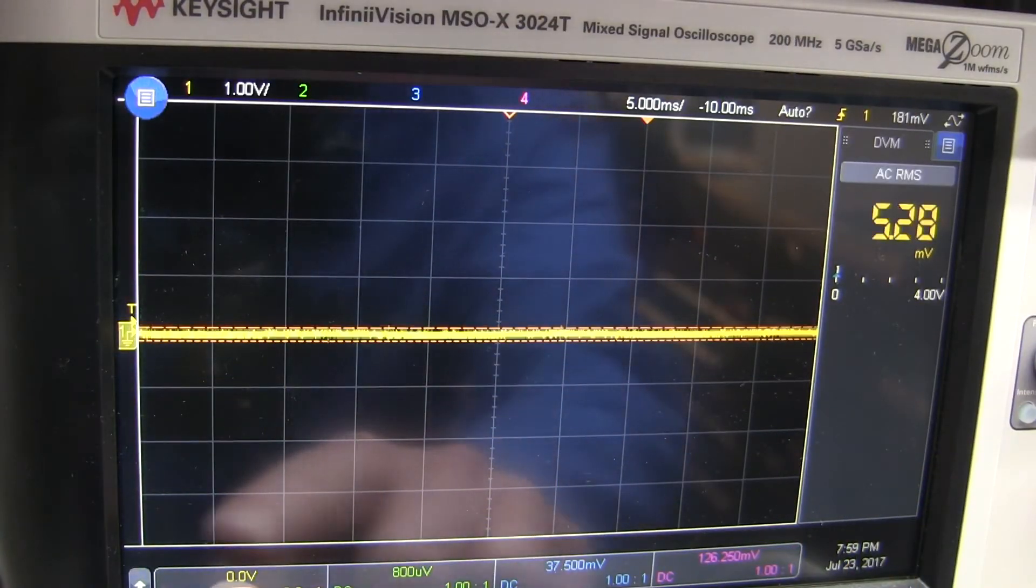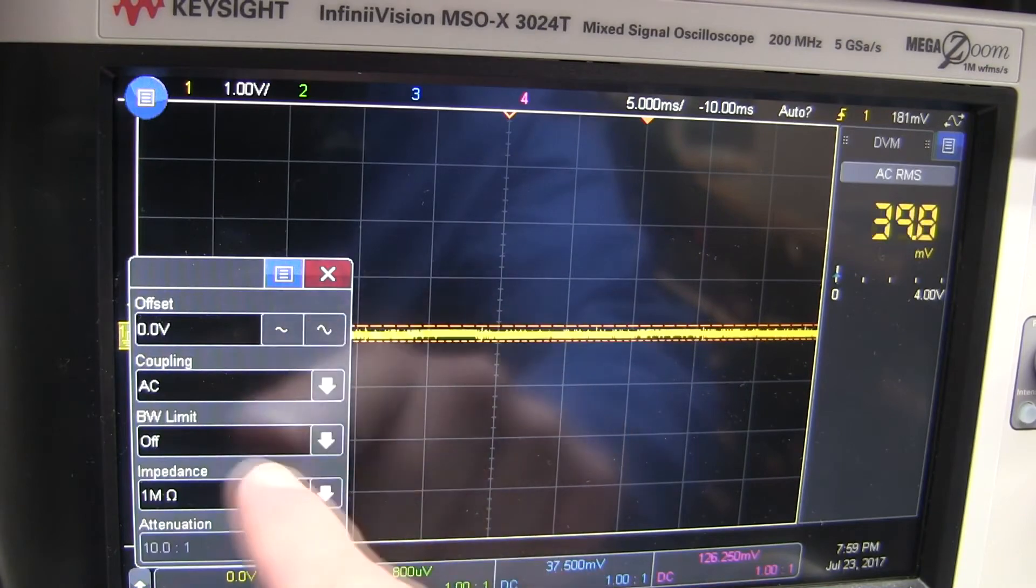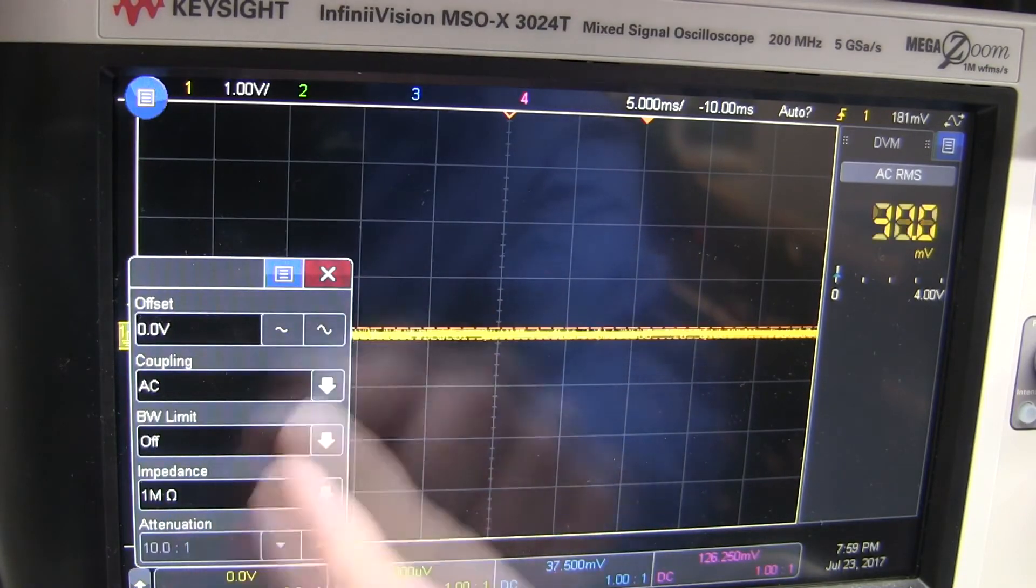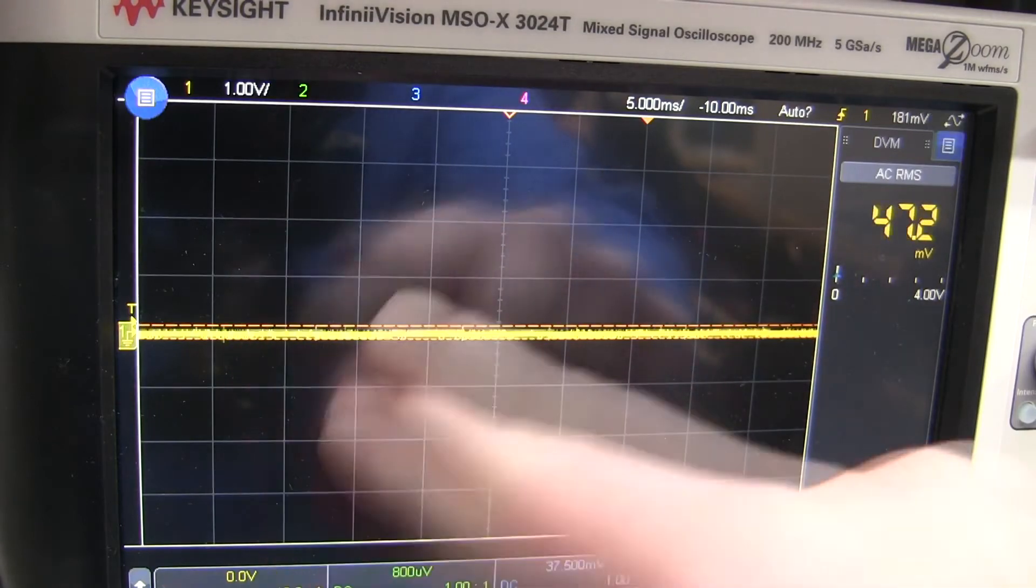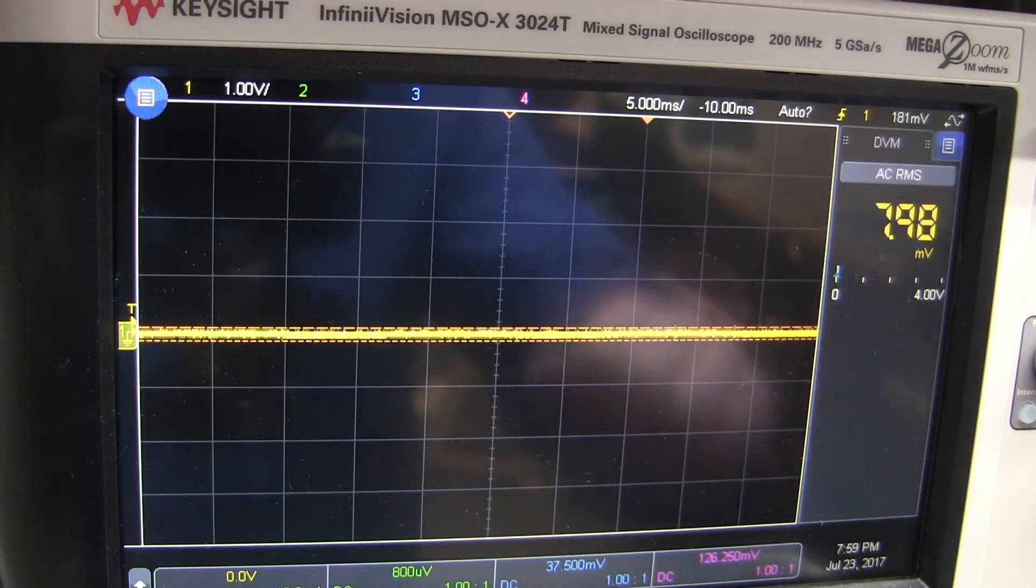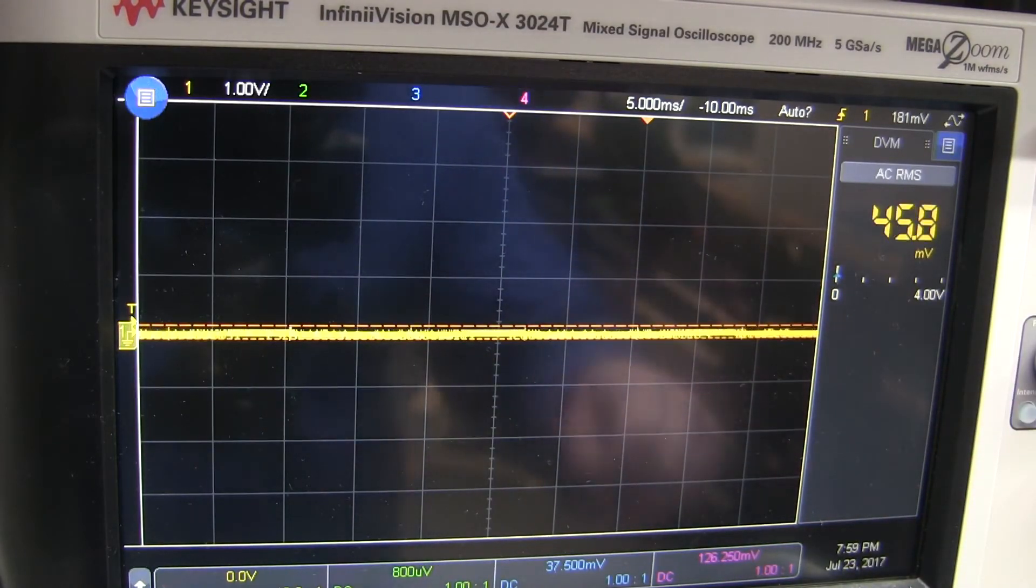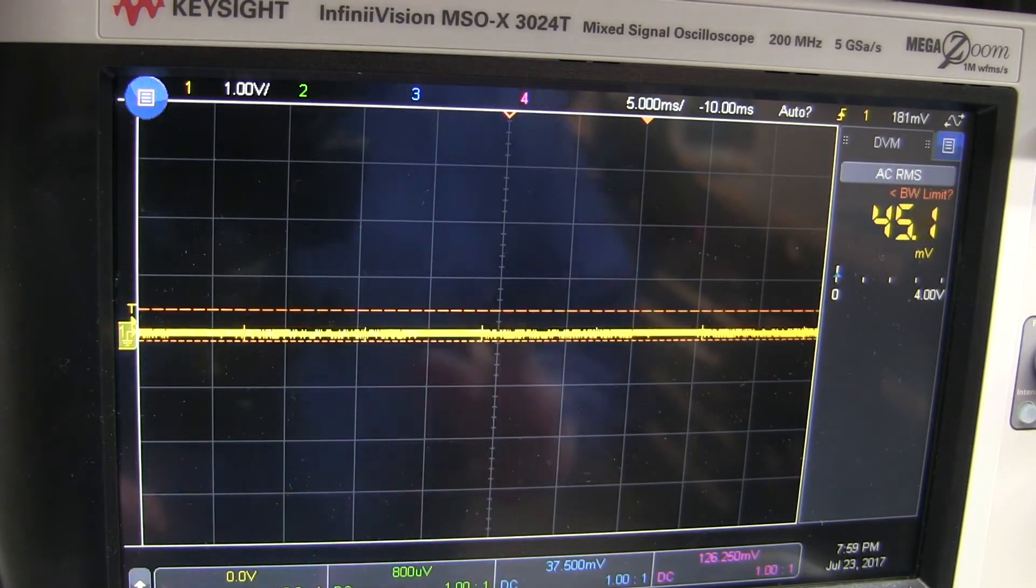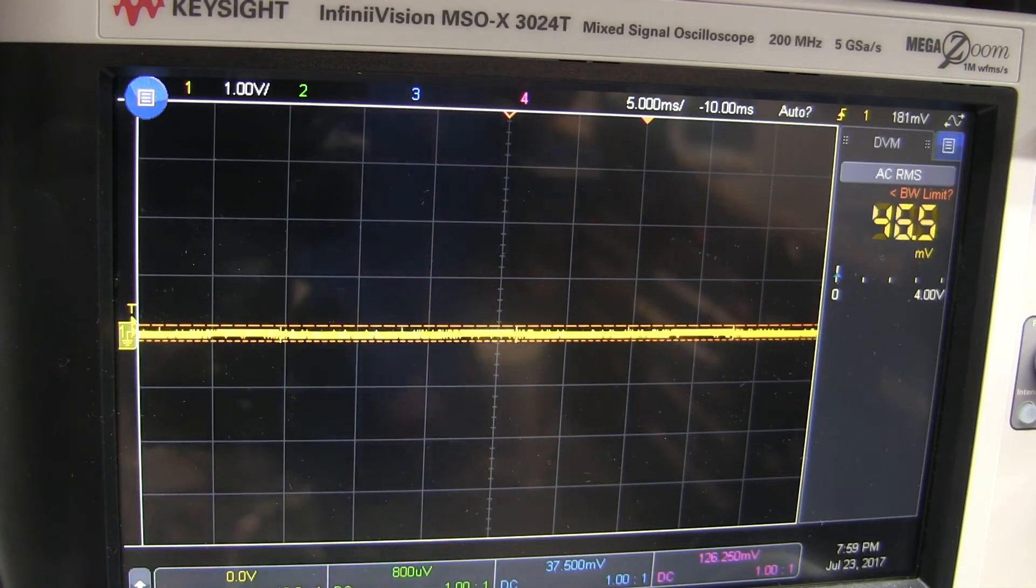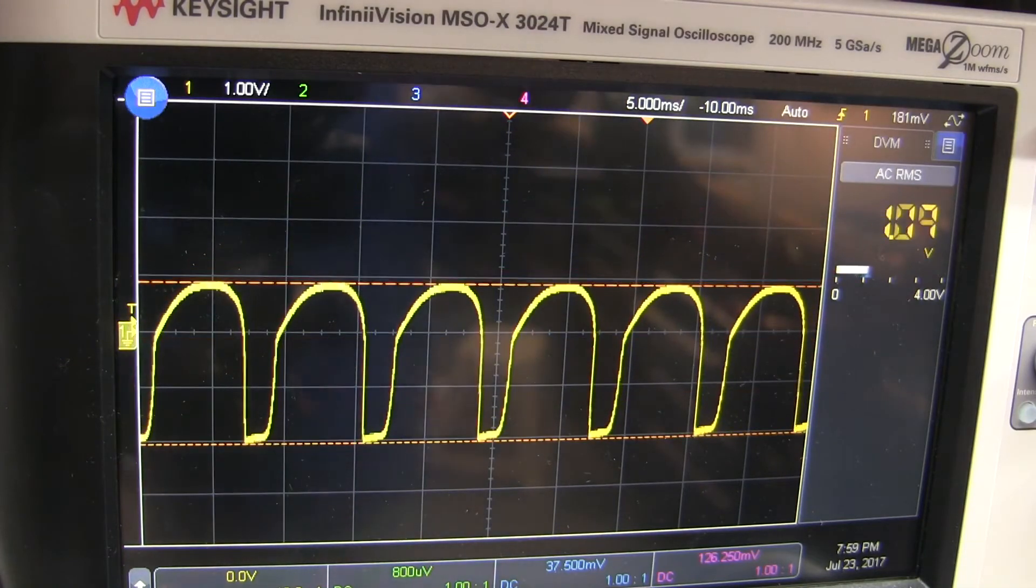All right. We have our scope hooked up and we're set to AC input. All right. That will work. That'll just show us any noise in this signal. We're not too concerned about the voltage levels at this point because we know we're getting enough voltage to it.